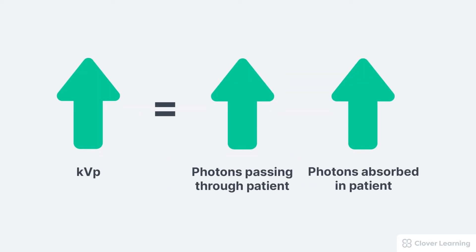This relationship can be confusing. Doesn't increasing KVP increase penetration through the patient? Yes, that's correct. Increasing KVP increases the number of photons passing through the patient, and it also increases the number of photons absorbed in the patient. This happens because increasing KVP increases both the energy and intensity of the beam.